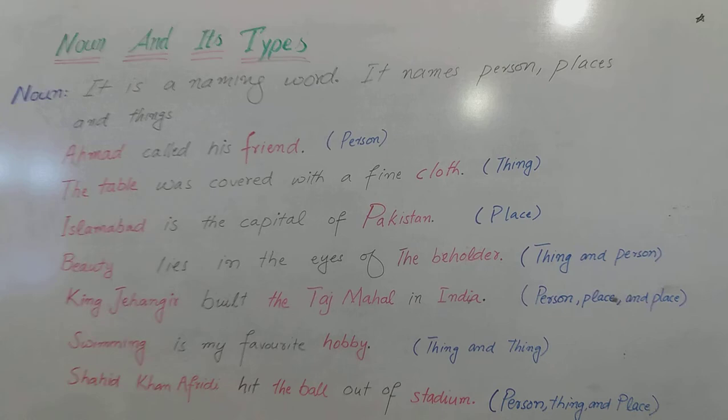'Shahid Afridi hit the ball out of the stadium.' We have a person — Shahid Afridi — a thing — the ball — and a place — the stadium. So to conclude: a noun is a naming word. It can name a person, place, a thing, an idea, an emotion or a feeling. It can also name an animal or a bird.